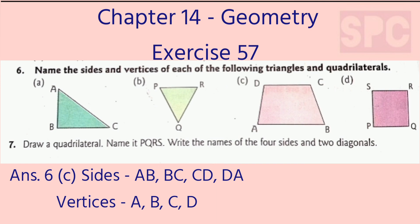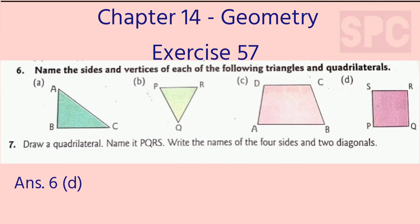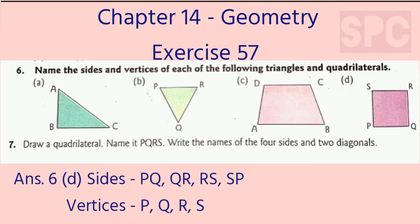Part D: This is the figure of a square. The four sides of the square are PQ, QR, RS, and SP. And the four vertices of this figure are vertex P, vertex Q, vertex R, and vertex S.